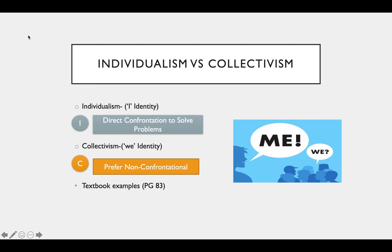Individualism versus collectivism is another value orientation. Individualism is the 'I' identity — it's about me, my career, and the individual — whereas collectivism is the 'we' identity, focused on taking care of the entire group. Individualists tend toward direct confrontation to solve problems, while collectivists prefer to be non-confrontational. In Paul's study, most students were collectivistic, likely because many come from African cultures, which tend to fall under collectivism. Remember, you don't have to be one or the other — there is a blend.